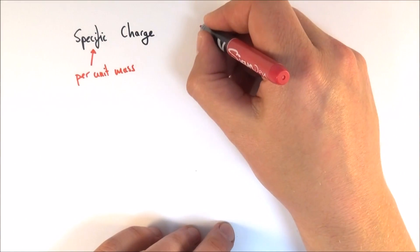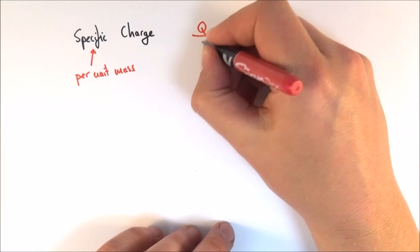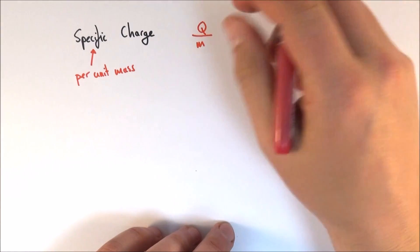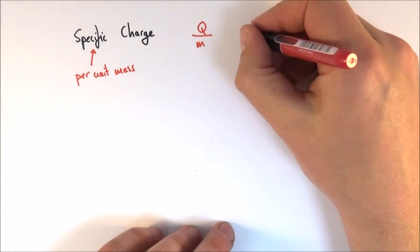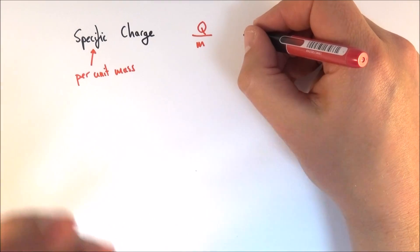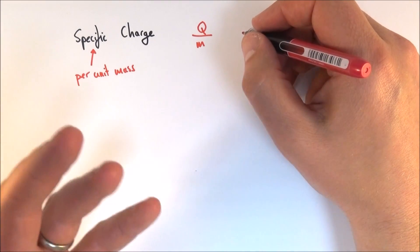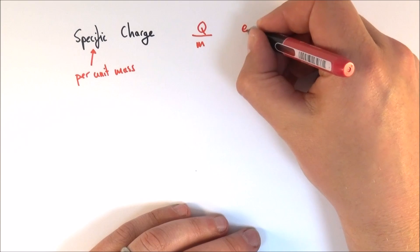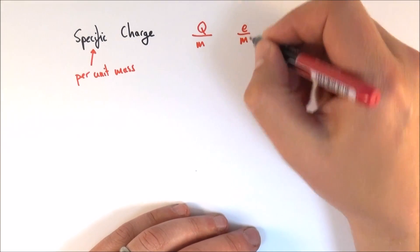Now the way we can work this out is basically looking at the charge on the particle divided by the mass. So sometimes we use Q for charge, sometimes if we're thinking about maybe things like protons and electrons which have a charge of plus one or minus one, we then maybe use the elementary charge which has the symbol e.